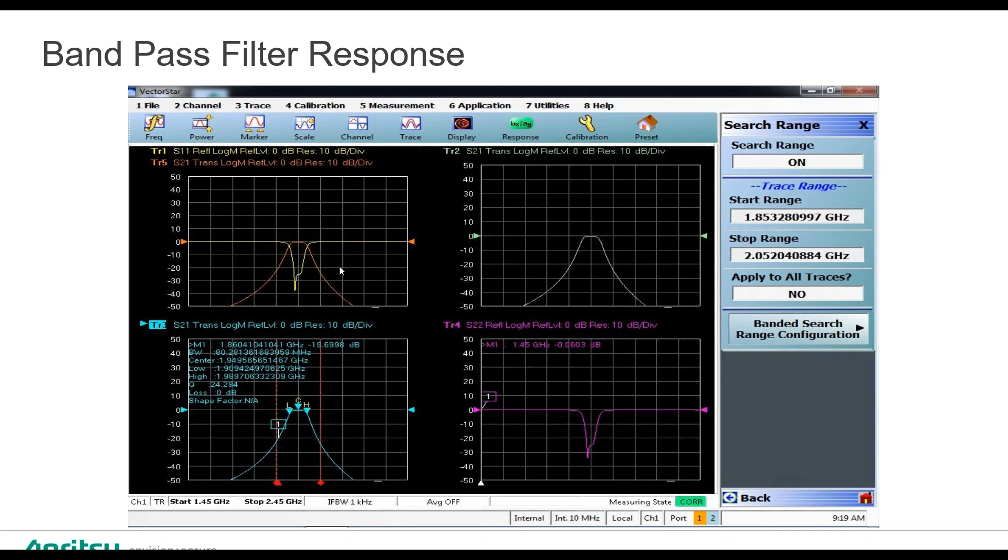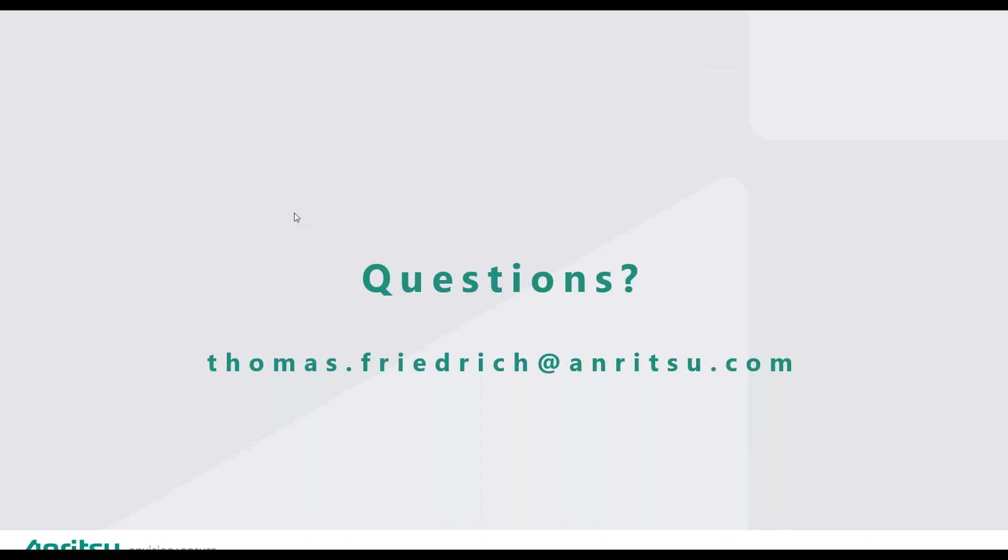Thank you. Next question. Do all ANRITSU VNAs have the Q-bandwidth measurement capability, and is it an option or standard? They all do. All of the benchtop models will have the shape factor, Q-factor, those types of statistics as well. And I'll bring up a VNA display here in a second. Those are standard. They're not an option, so they're in every benchtop model that ANRITSU has.